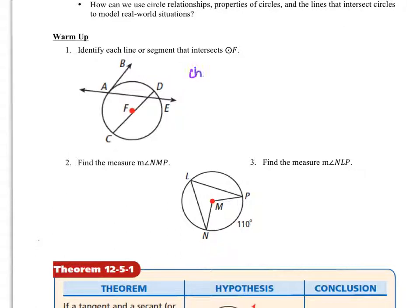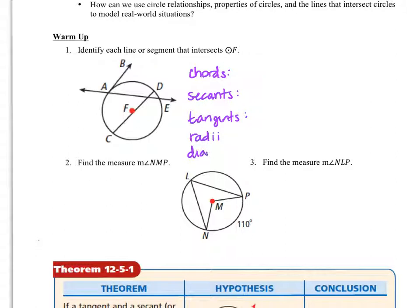We know that we can have chords, secants, tangents. We could have radii and diameters also. In this particular case, we don't have any diameters.